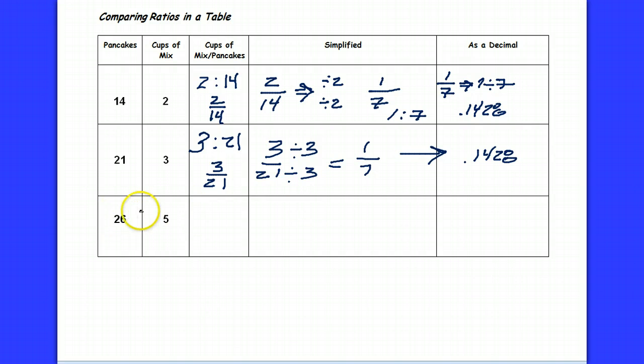Another friend comes in and says they want to make 26 pancakes, and from what they calculate, they need 5 cups of mix. So they're telling me that 5 cups of mix will yield 26 pancakes, or 5 over 26 is the same relationship as 2 over 14 and 3 over 21.